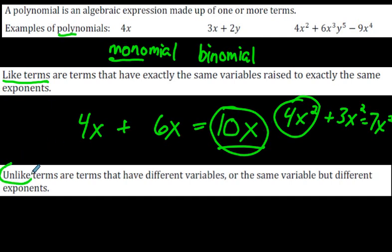Because one is just an x and one has an x squared, you cannot put them together — those are called unlike terms. Unlike terms are terms that have different variables, or the same variable but different exponents. This one has an invisible exponent of 1, and this one has an exponent of 2. You cannot put those together — those are unlike terms.